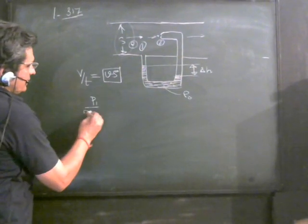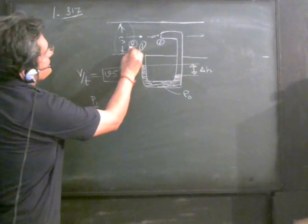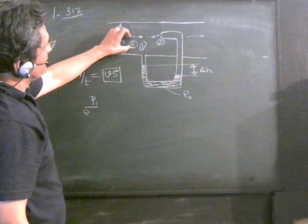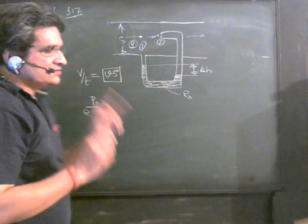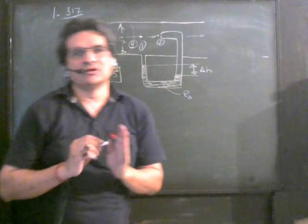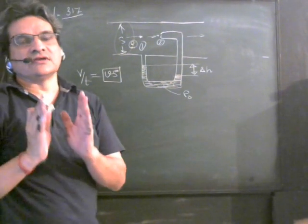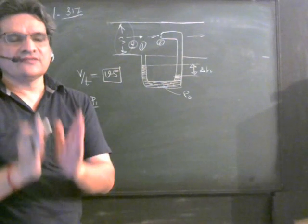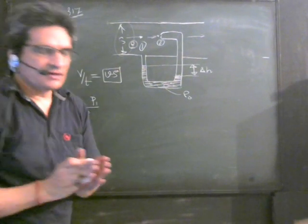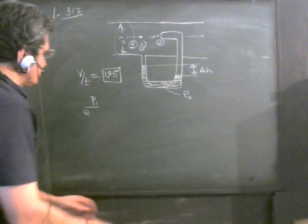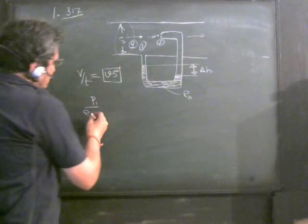Then p₁/ρg—ρ you have to take here, don't take ρ₀. This is the density of the gas on which we are applying Bernoulli's equation. Don't take any other density. I repeat: use the density of the gas or liquid on which you are applying Bernoulli's equation.